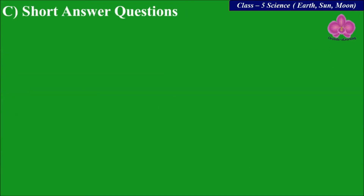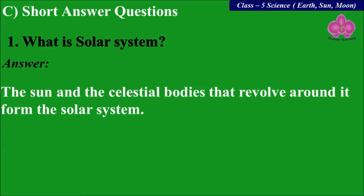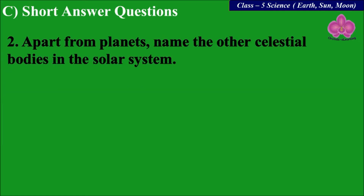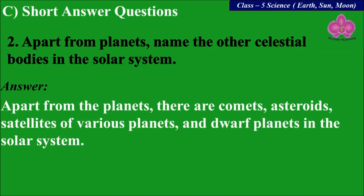Next: short answer questions. First question: what is the solar system? The Sun and the celestial bodies that revolve around it form the solar system. Apart from the planets, name the other celestial bodies in the solar system — there are comets, asteroids, satellites of various planets, and dwarf planets in the solar system.